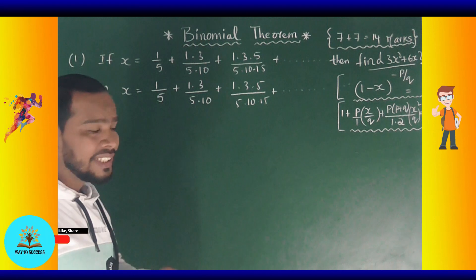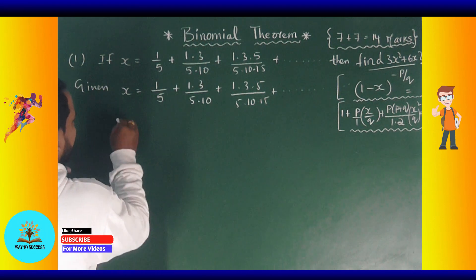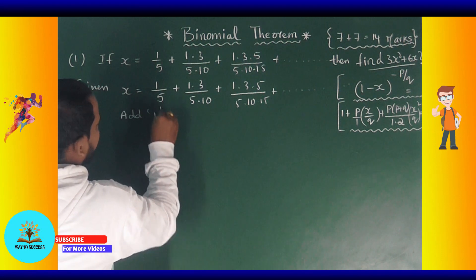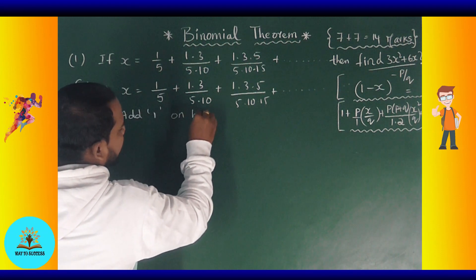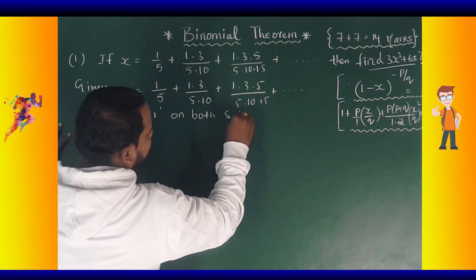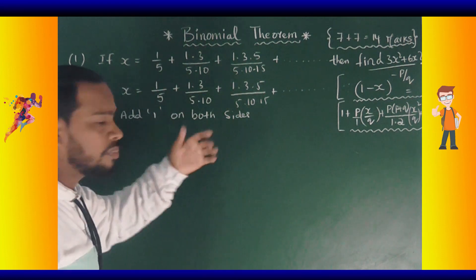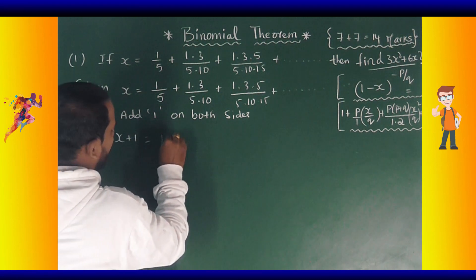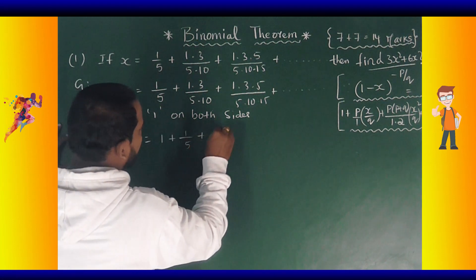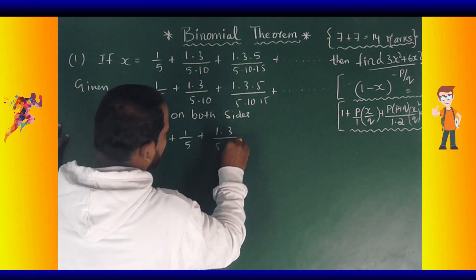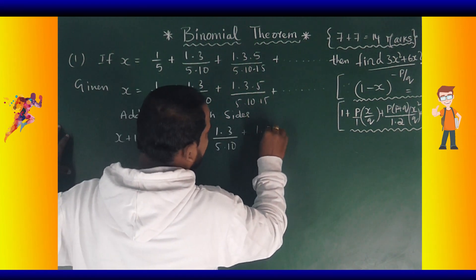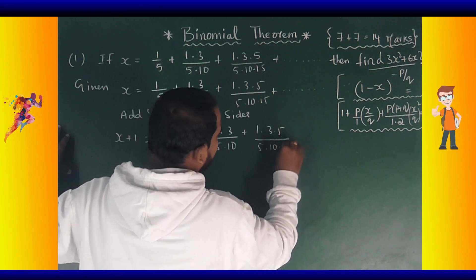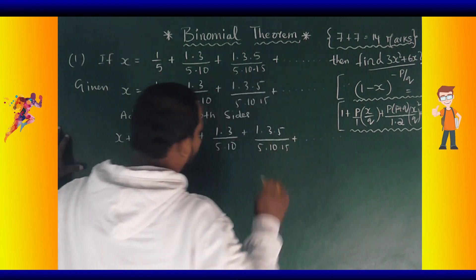This is our question. We need to complete the series. Adding 1 on both sides. Then x plus 1 equals 1 plus 1 by 5 plus 1 into 3 by 5 into 10 plus 1 into 3 into 5 by 5 into 10 into 15 plus up to so on.